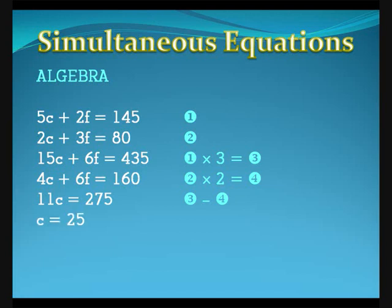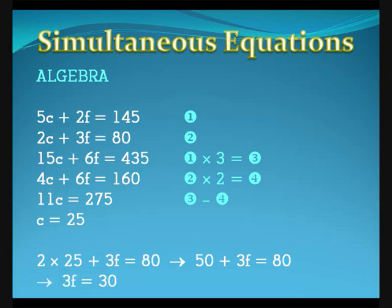Substitute c equals 25 into one of the equations. Equation 2 is the simplest. 2 times 25 plus 3f equals 80. So 50 plus 3f equals 80. So 3f equals 30, and f equals 10.